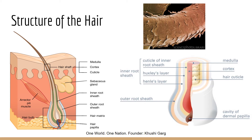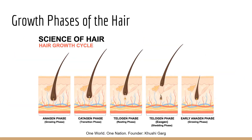Those three layers — medulla, cortex, and cuticle — make up the actual hair shaft. Around the hair bulb and root, there are numerous other layers. Wrapping right around the cuticle is the inner root sheath, which is further broken down into the cuticle of the inner root sheath, Huxley's layer, and Henle's layer. Huxley's layer gives the hair structure, and Henle's layer is the outermost layer of the inner root sheath. Next is the outer root sheath, which serves as a place for stem cells to be stored before being integrated into the hair. The hair matrix at the bottom of the follicle generates and produces new hair cells.